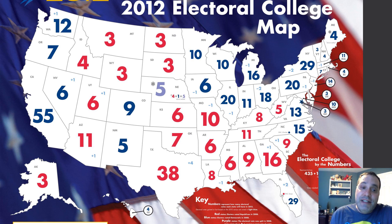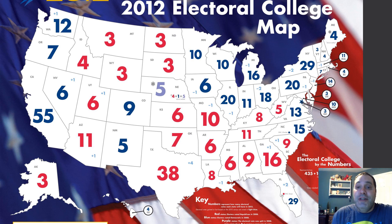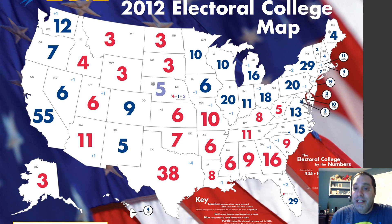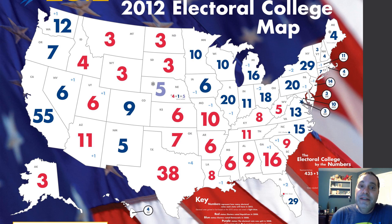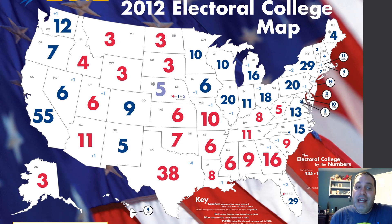You might think California with 55 votes or Texas with 38 have a great advantage, but that's actually not true — those states get the worst deal in this system. The electoral map changes every 10 years after the census through reapportionment. Since the total is fixed at 538, if any state gains a seat, someone else loses one. You can see states like Georgia gained one vote and New York lost two after the 2010 census.